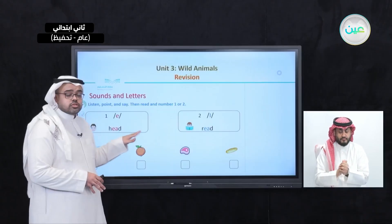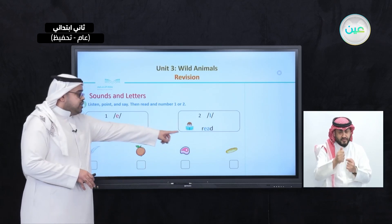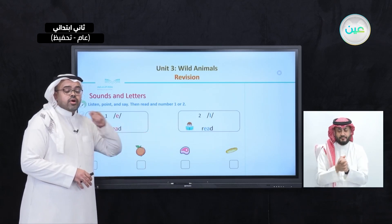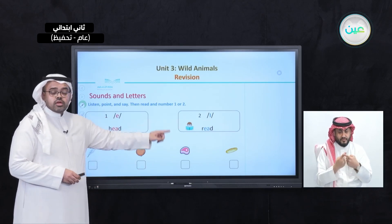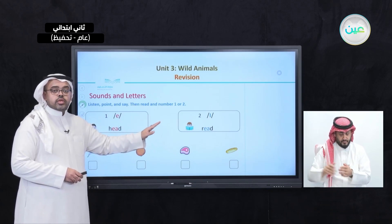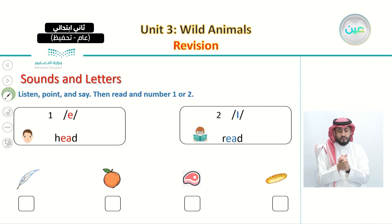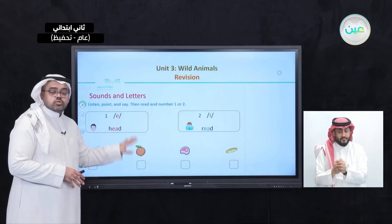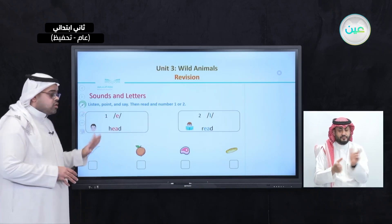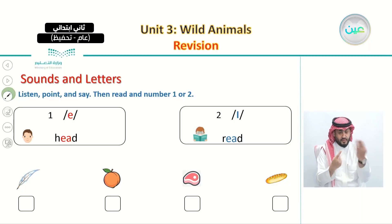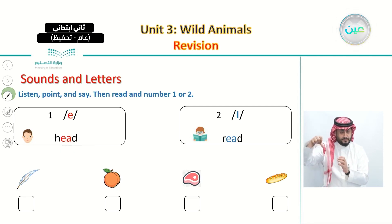So here we also have E and A, but they sound different. The first one is pronounced as head, and the second one is pronounced as read. We have listened to these two sounds and now you are going to listen to four other words and match each word to either sound number one — head — or sound number two — read.